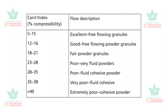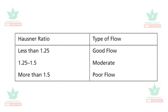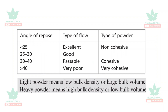The Hausner's Ratio also determines the type of flow. When the Hausner's Ratio is less, the flow will be better. Less than 1.25 determines good flow of powders; 1.25 to 1.5 is moderate flow; and more than 1.5 is poor flow of powders.